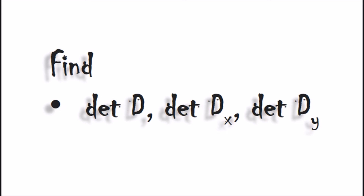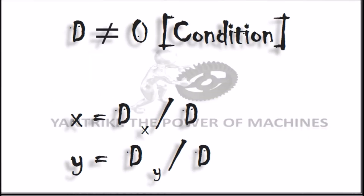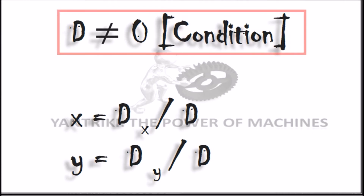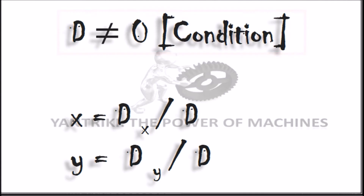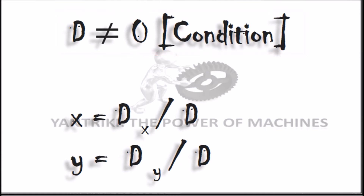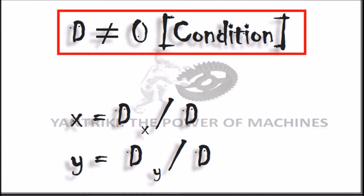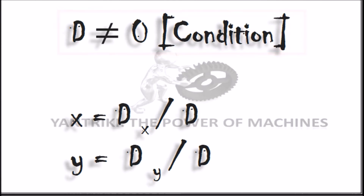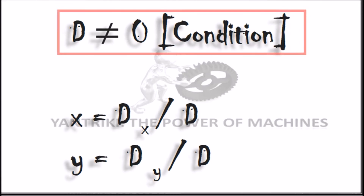There is an important condition for Cramer's Rule to be applicable: if D equals 0, you cannot use Cramer's Rule. D must not be equal to 0. When that condition is met, we can calculate x = Dx / D and y = Dy / D.